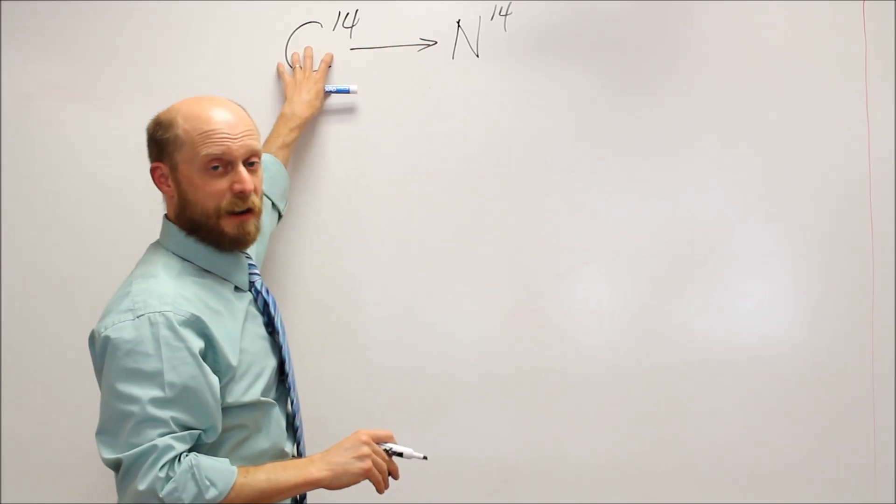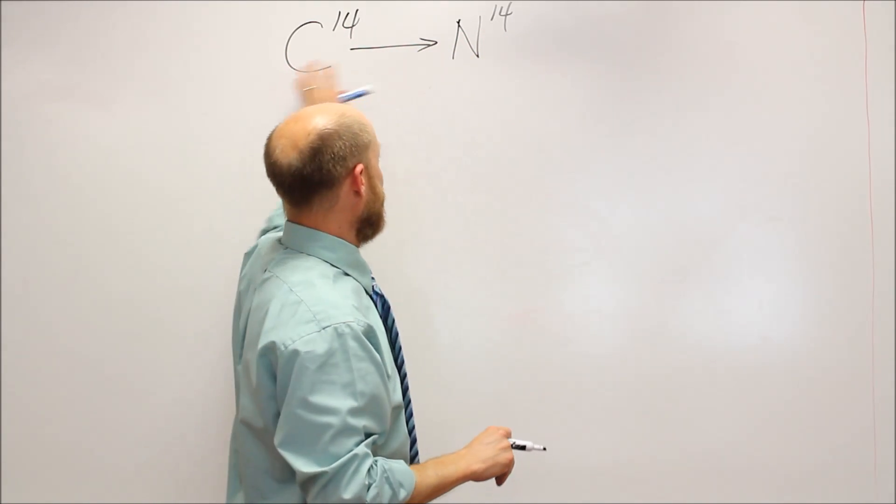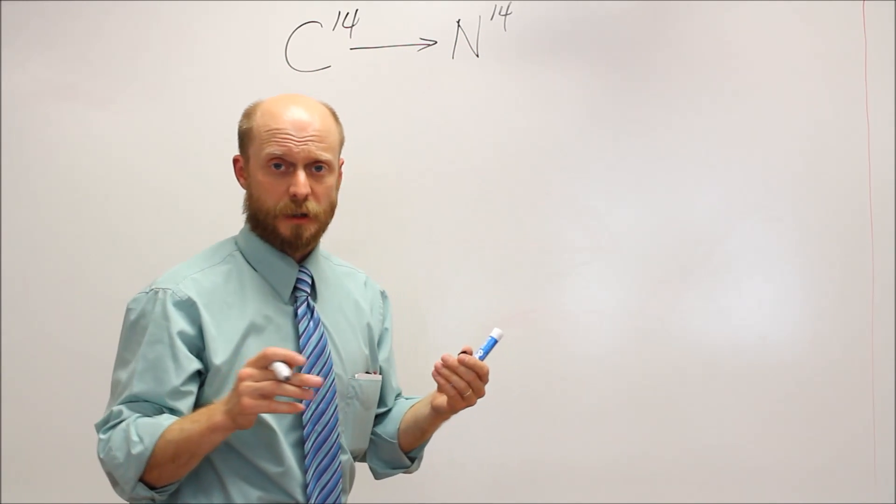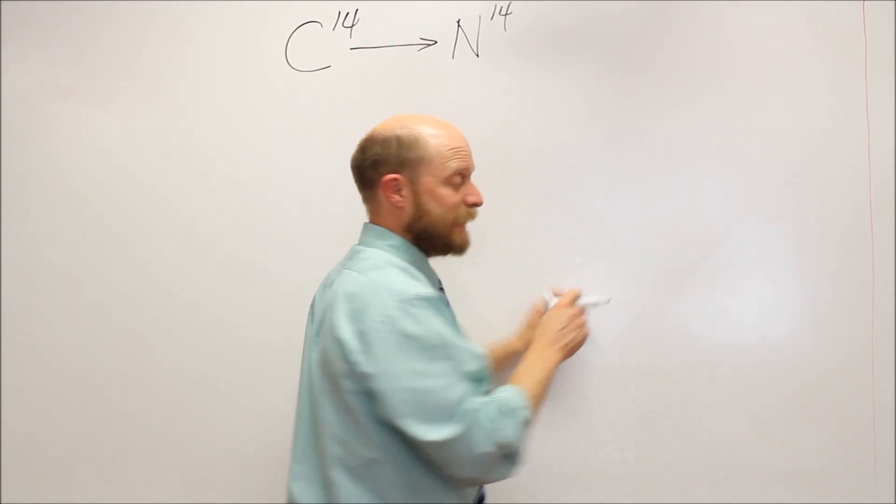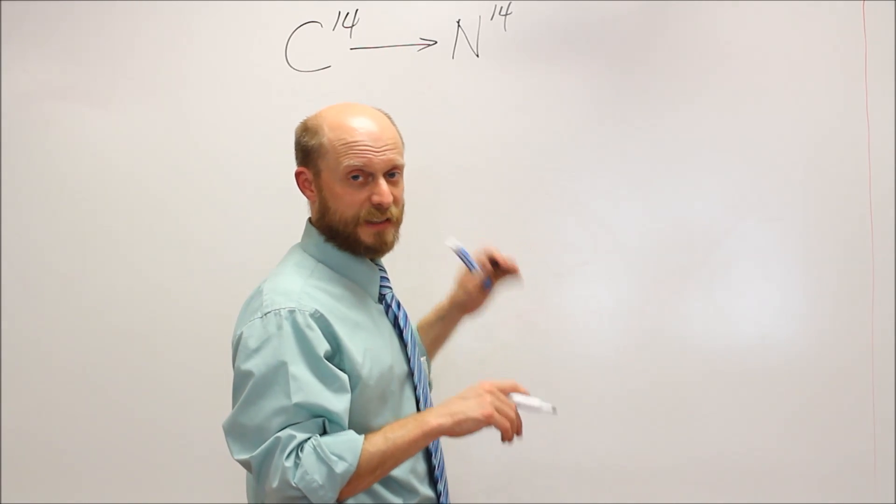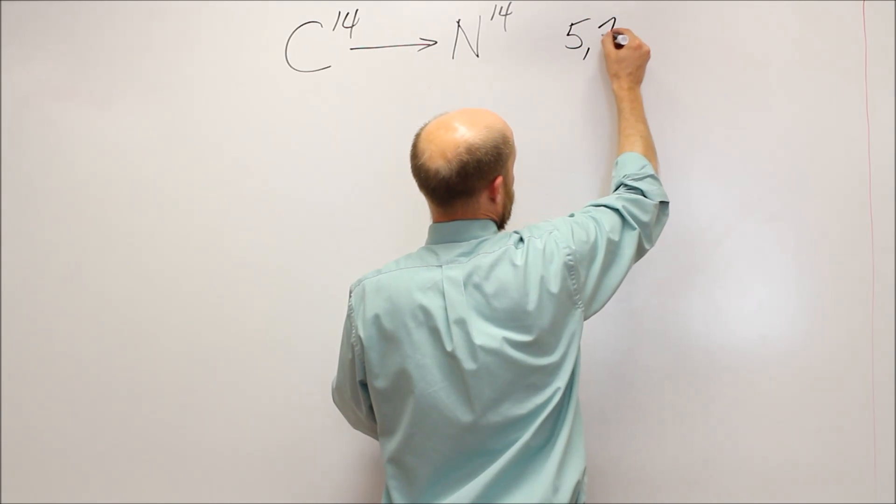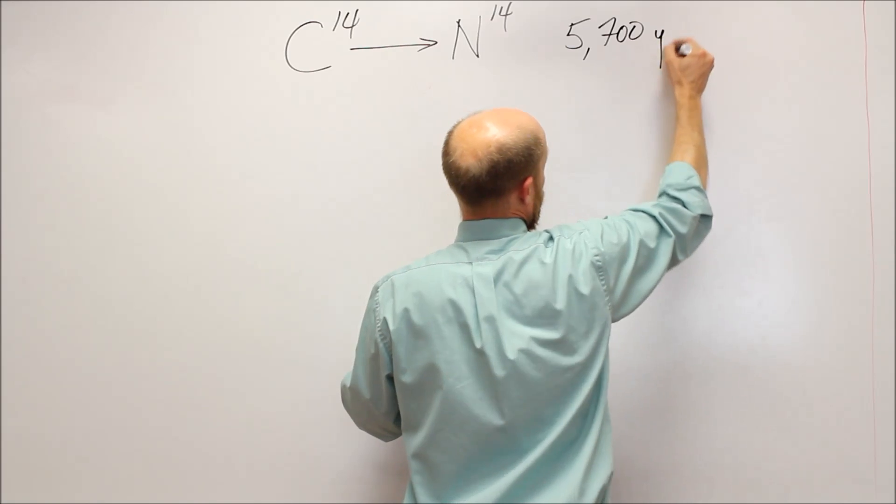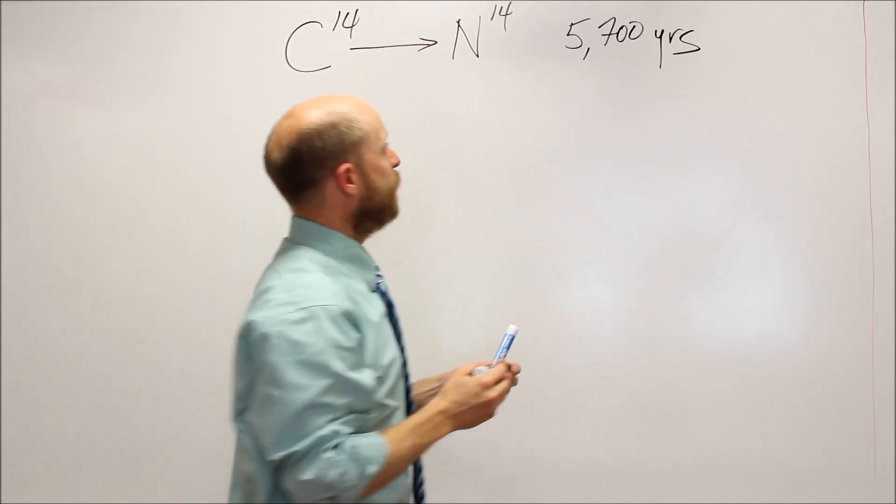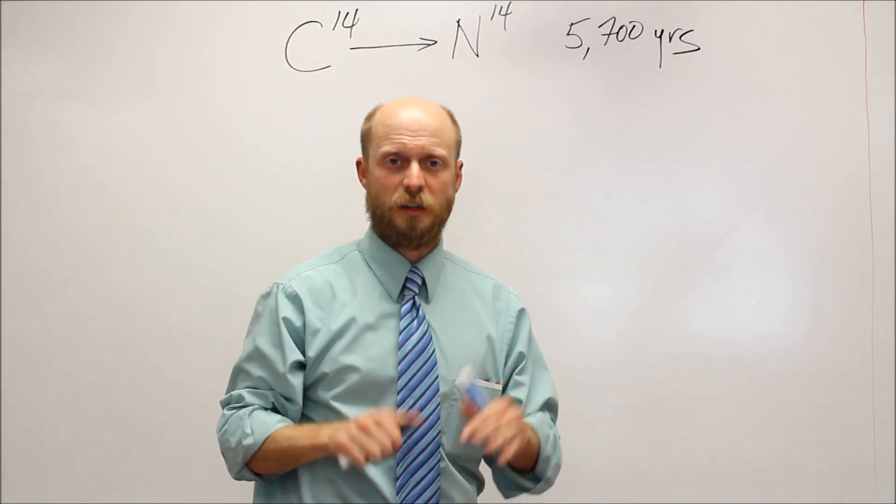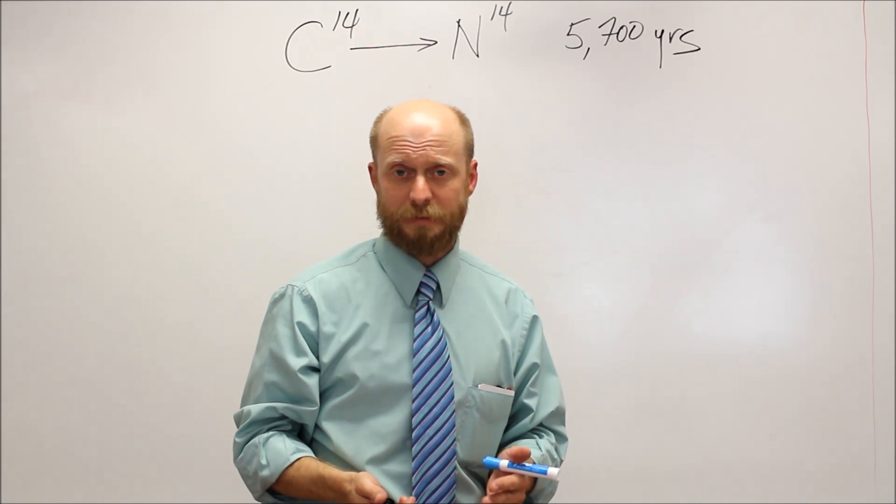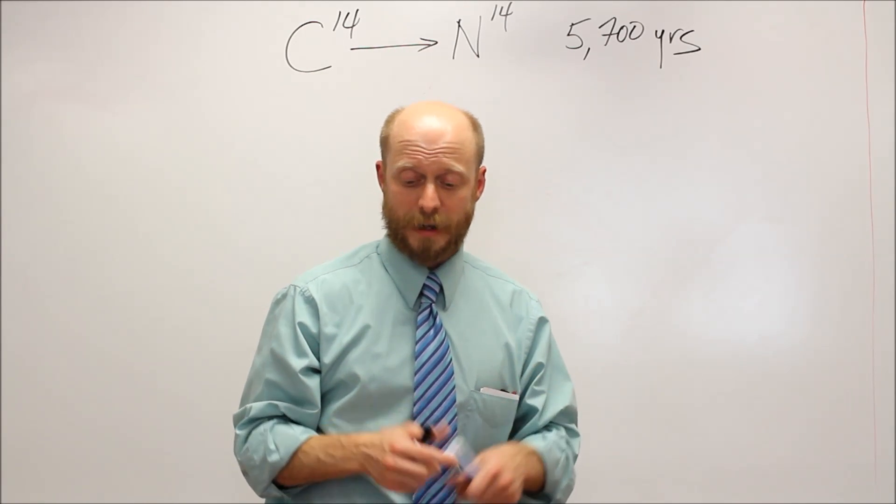This is called the parent. This is called the daughter. It will naturally become nitrogen-14. And the time it takes for that to happen is very set. It doesn't change. For carbon-14, the half-life is the word we use for it. It's 5,700 years half-life. I'm going to describe what half-life or how that works right now.